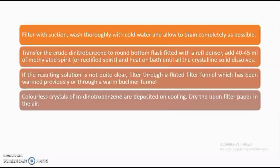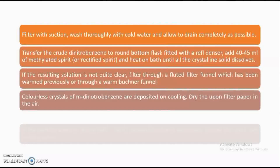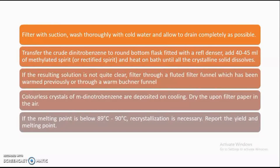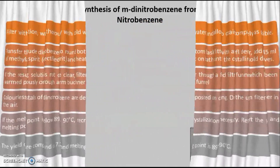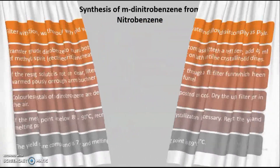Colourless crystals of M-dinitrobenzene are obtained and these are dried upon the filter paper in the air. If you have to check the melting point — if the melting point is below 89 to 90 degree Celsius then you have to carry out the recrystallization. Report the yield and the melting point. Now let's begin with our today's practical session.